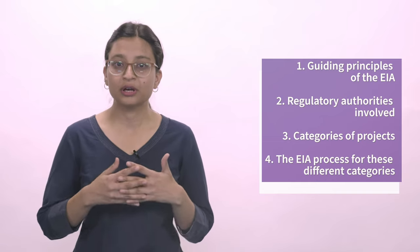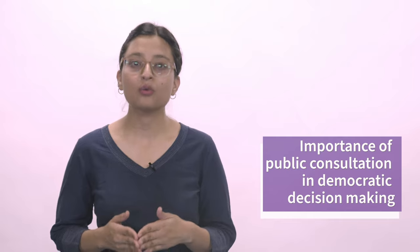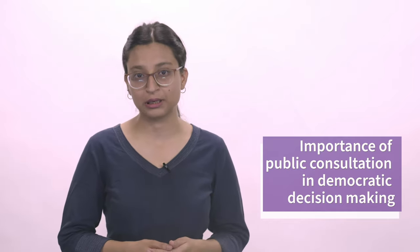In the end, we should remember that Gramsabhas and affected communities can actively utilize the public consultation as well as the entire EIA process to hold the project proponent accountable and ensure transparency. In this lecture, we have understood the guiding principles of EIA, regulatory authorities involved, categories of projects, and the process involved under EIA for different categories. We have also understood the importance of public consultation in EIA and how it upholds the principle of democratic decision-making. This space is ideal for local communities to interact, assert, and engage in decision-making for an upcoming project. Stay tuned for the next lecture on the principles of criminal justice system and forest dwellers. Thanks for watching.